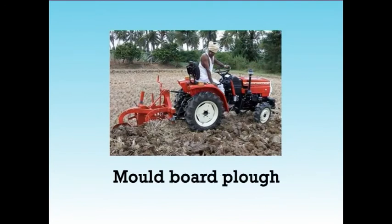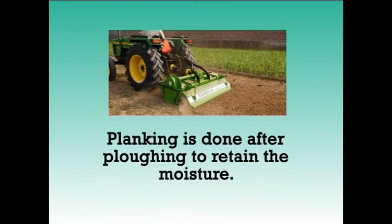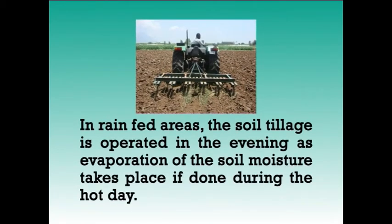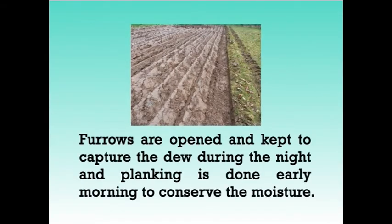Now let's see about the cultural practices — land preparation. The soil is ploughed with a mould board plough after kharif crop harvest to bring a fine tilth. As the seed is small, it is deeply ploughed with two to three times harrowing or four to five intercross ploughings with a tractor-attached cultivator followed by a rotavator. Planking is done after ploughing to retain the moisture. In rain-fed areas, soil tillage is operated in the evening as evaporation of soil moisture takes place if done during the hot day. Furrows are opened and kept to capture the dew during the night, and planking is done early morning to conserve moisture.